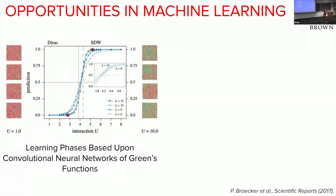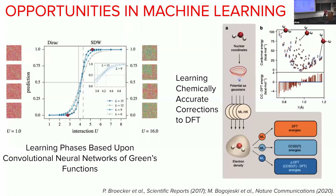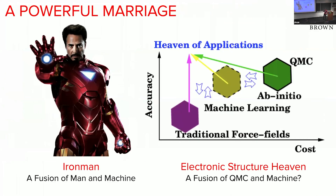Part of the motivation for looking at machine learning comes from recent work showing that people have been able to learn phase transitions and do delta machine learning to correct energies. This serves as fodder for thinking: can we take the computational cost of QMC, maintain or improve its accuracy, while bringing the cost down using machine learning? It's like an Iron Man situation — giving QMC extra technology to make it even more powerful.